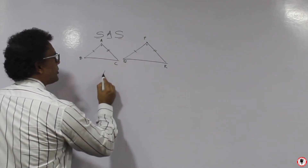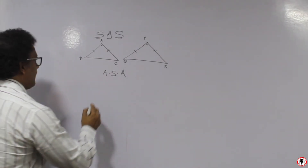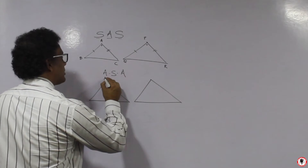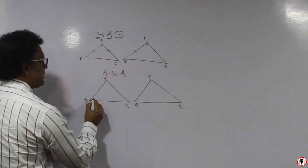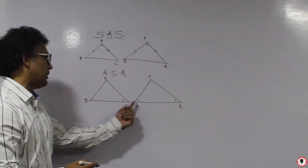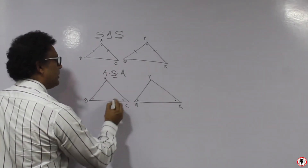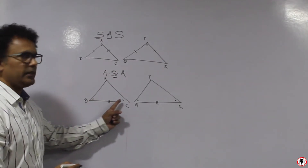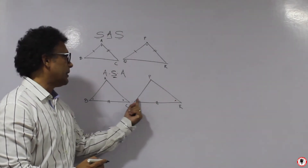The next test is ASA — Angle-Side-Angle. Suppose triangle ABC and triangle PQR: if this angle and this angle are congruent, and this angle and this angle are congruent — so two angles are congruent — then the side between those angles must also be congruent. Then we can say the triangles are congruent by the ASA test.